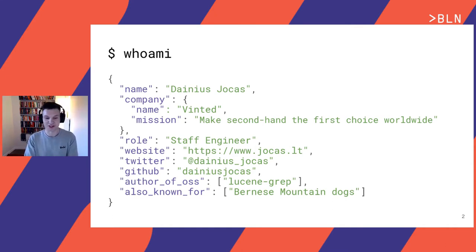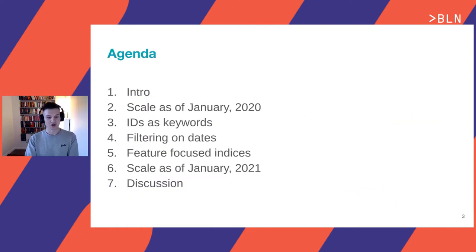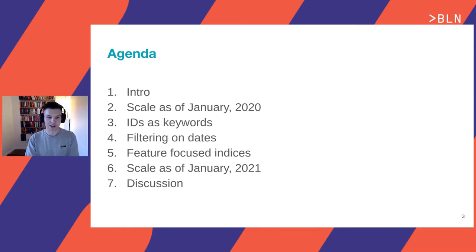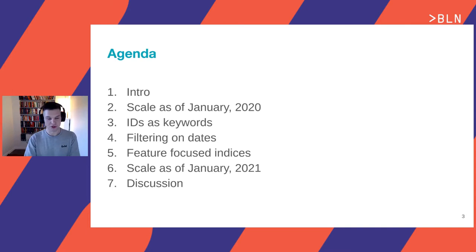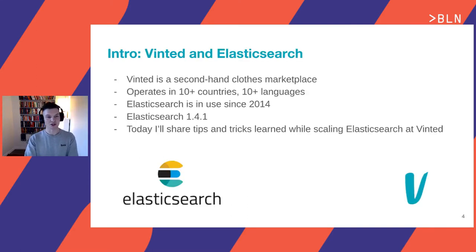I have some online presence — a personal website, I post on Twitter, and I'm the author of a little search tool called Lusing Rep Check on GitHub. The agenda for today's presentation: a little introduction, then I'll talk about the scale of the Elasticsearch installation at Vinted a bit more than a year ago, then three optimization strategies, then the scale a year later, and a discussion at the end.